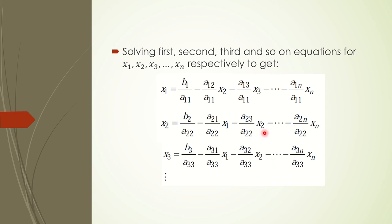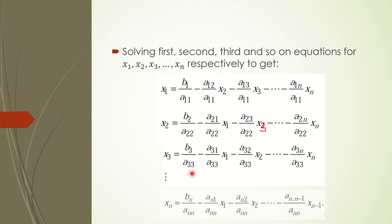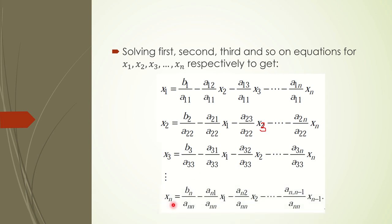There is a typo in the notes — that term should be x3, not x2, because x3 is left on the left-hand side. So obviously the next term will be x4 because x3 is on the other side. In the last equation, if you solve for xn, you take everything to the right except xn and divide by ann. This is almost the same as what we do in the fixed-point method for solution of non-linear equations.